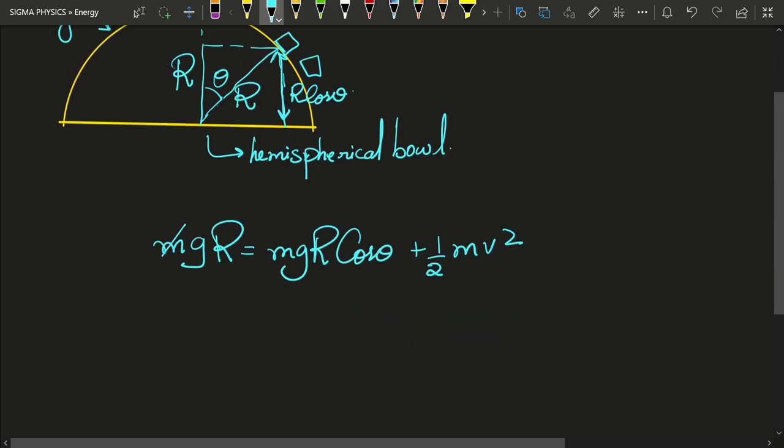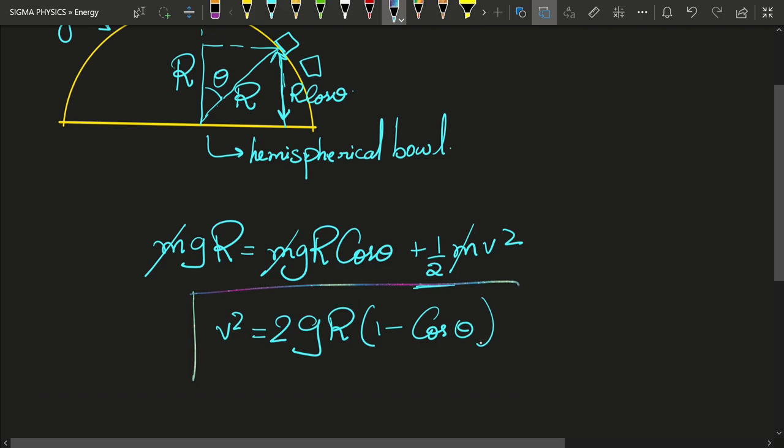And you can easily see that the m's are going to cancel. And we will be left with v squared equal to, I can take gr common, 1 minus cos theta. And this 2 I am going to take to the numerator on the other side. So I will be left with 2gr 1 minus cos theta. Let me call this equation number 1.